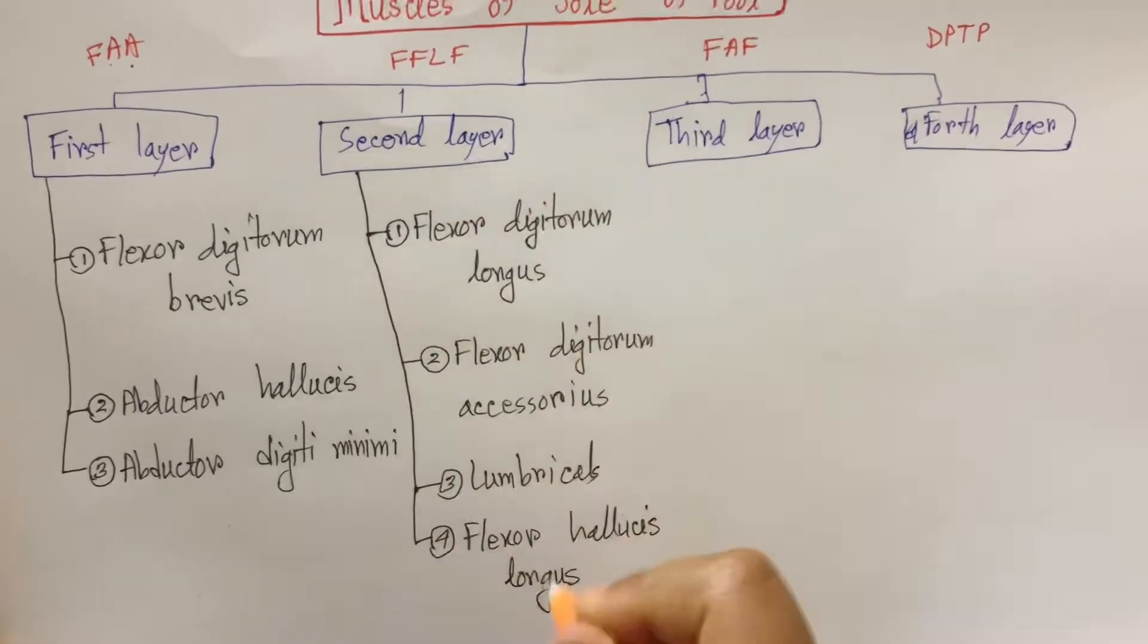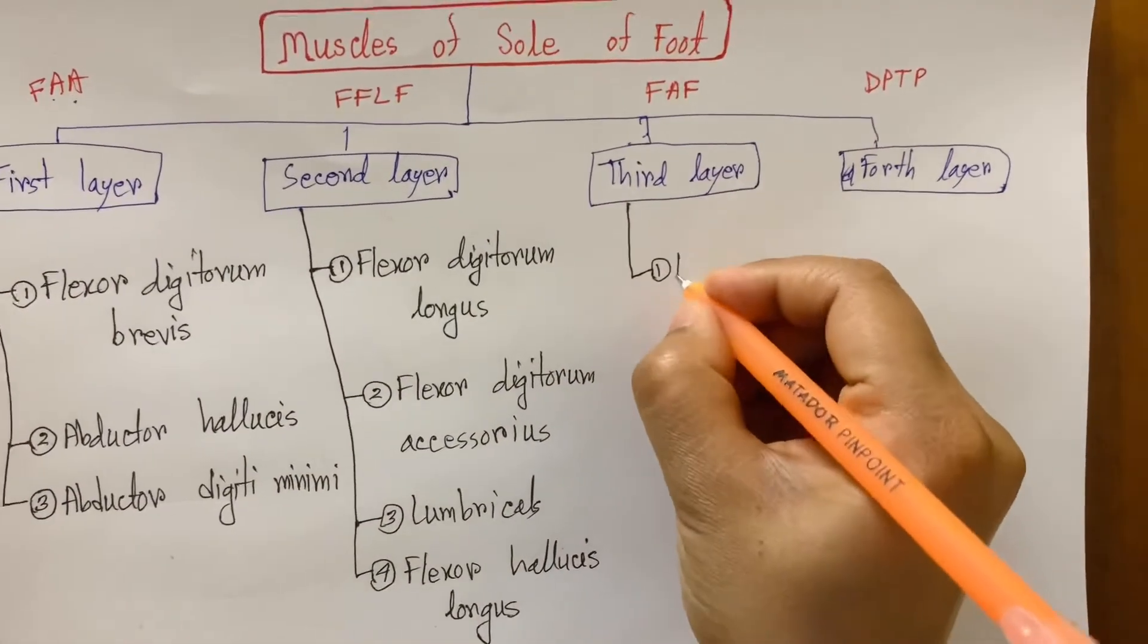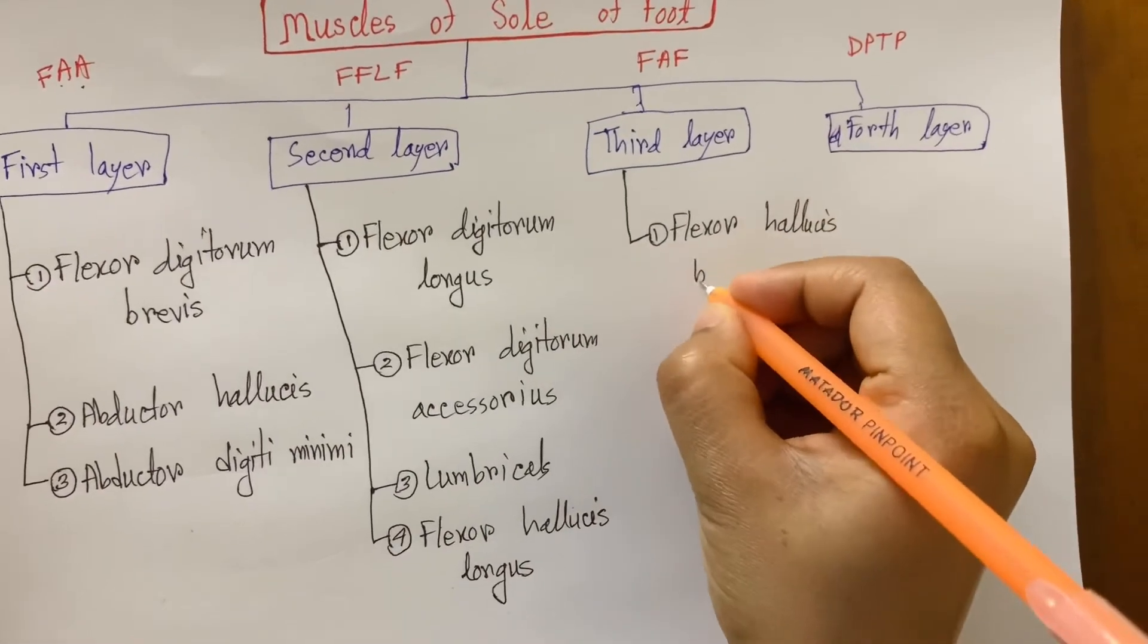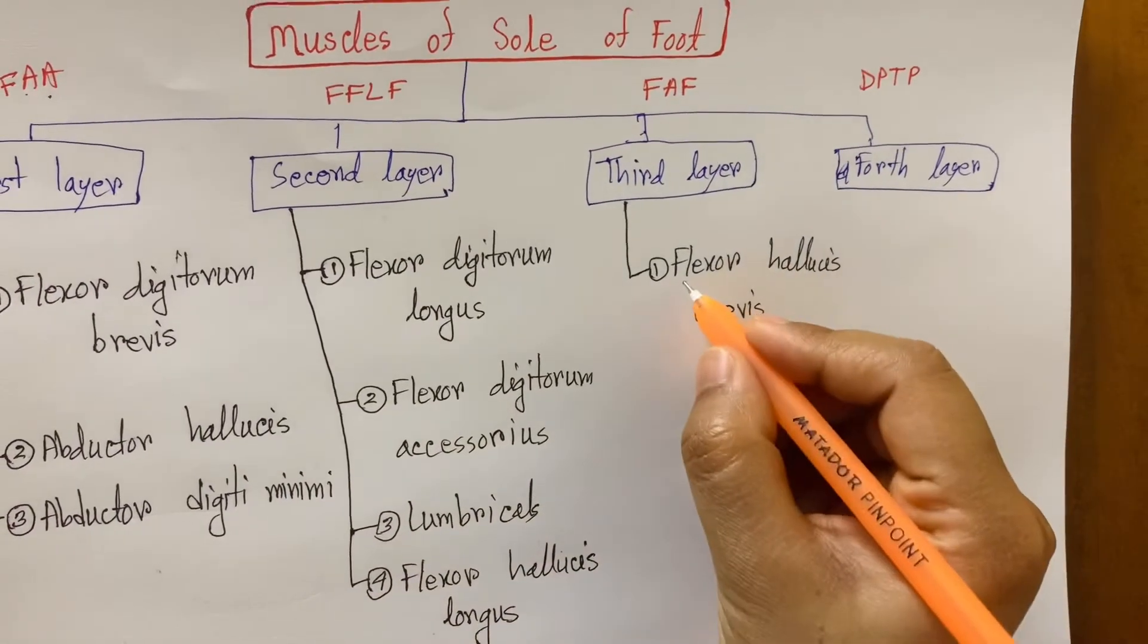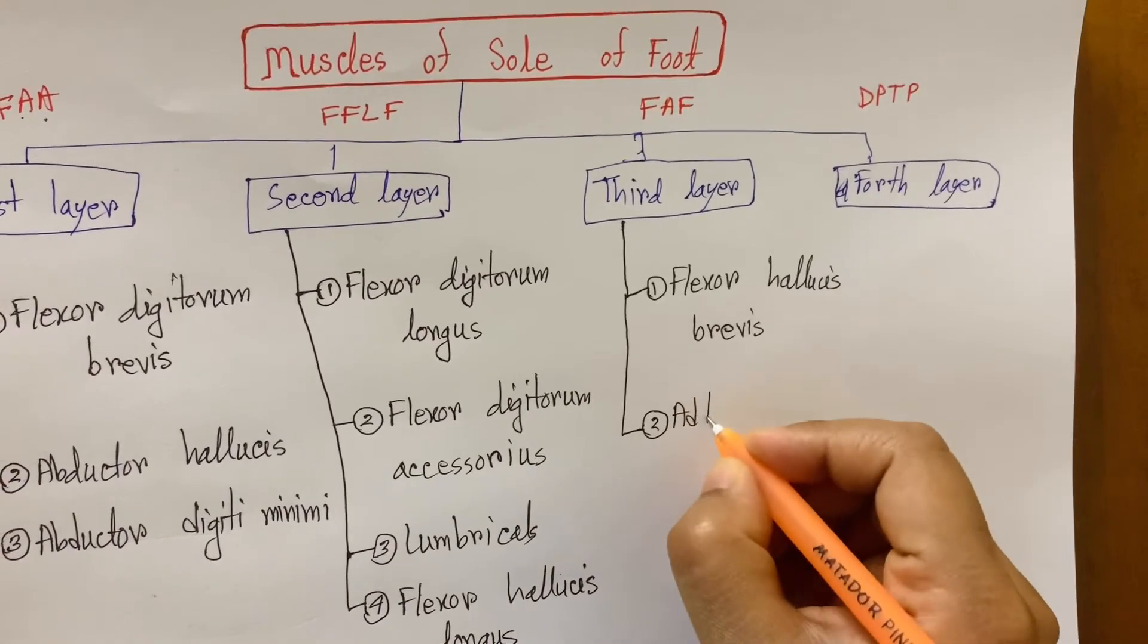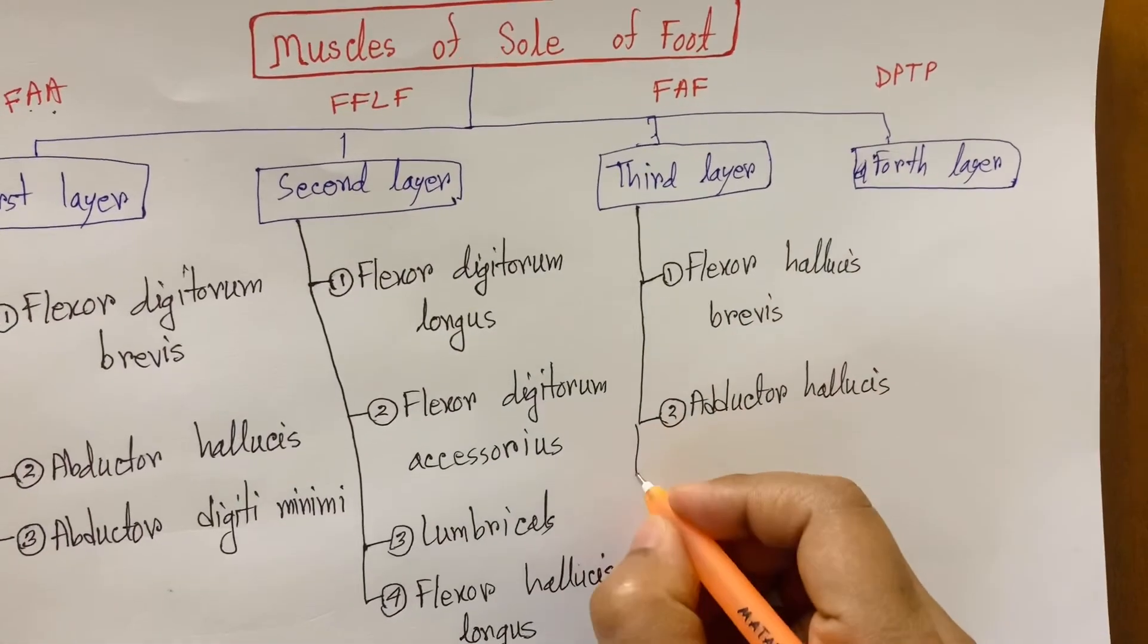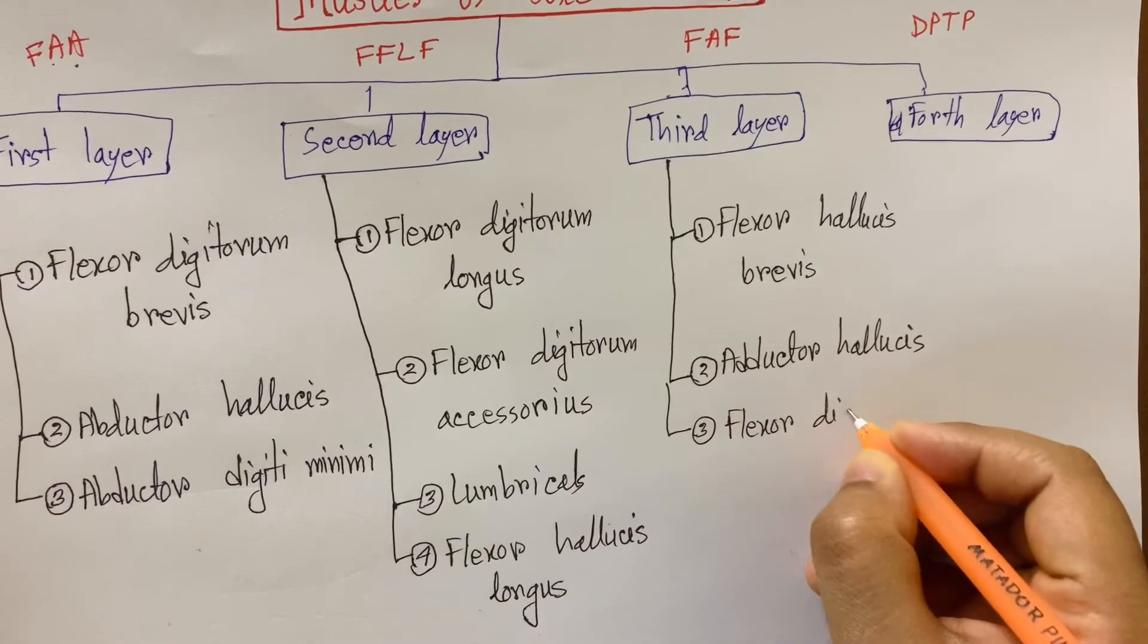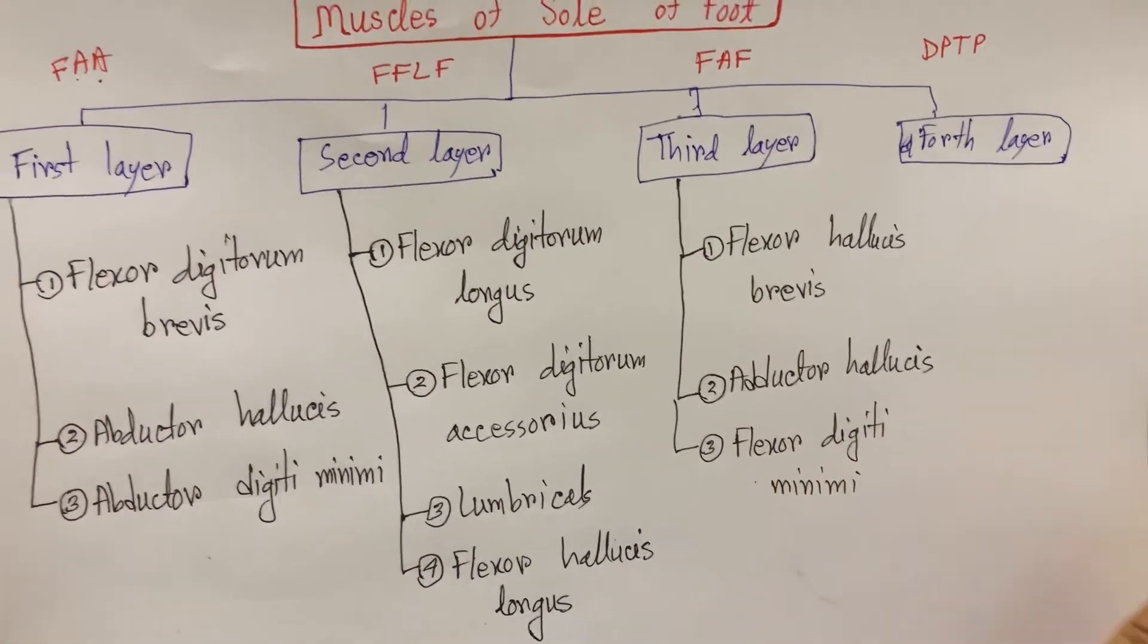Now let's see third layer muscles. F: Flexor hallucis brevis. Then A: Adductor hallucis. And F: Flexor digiti minimi brevis.